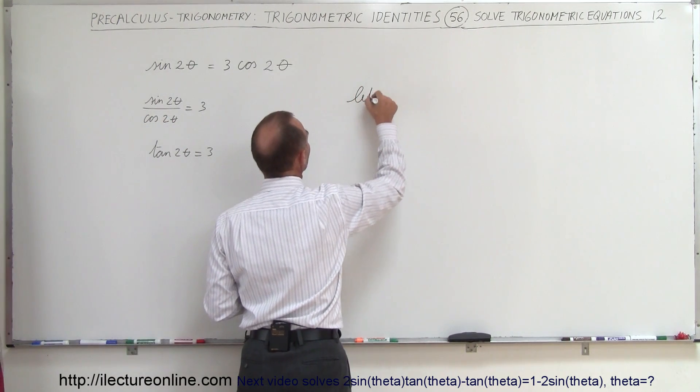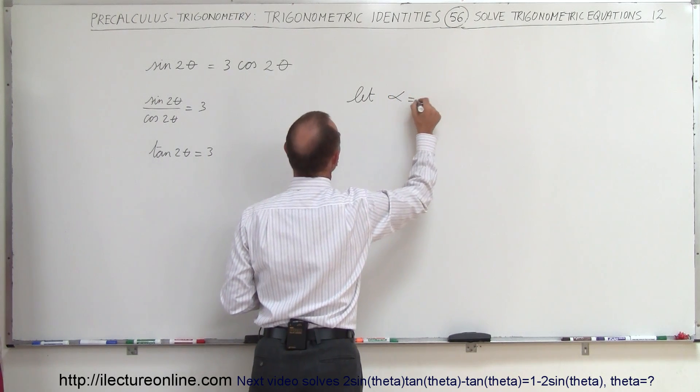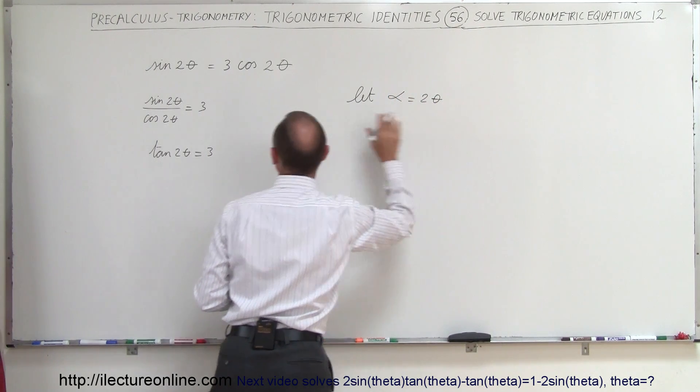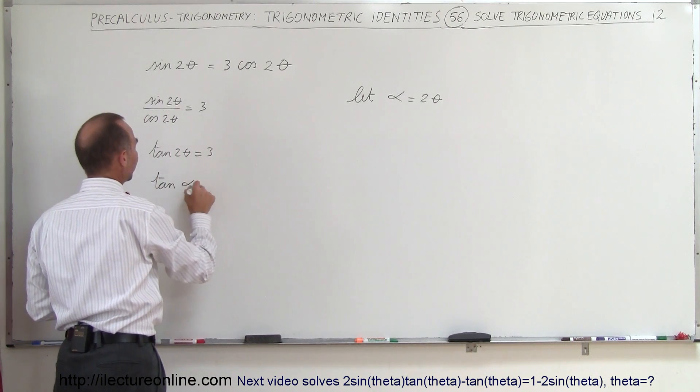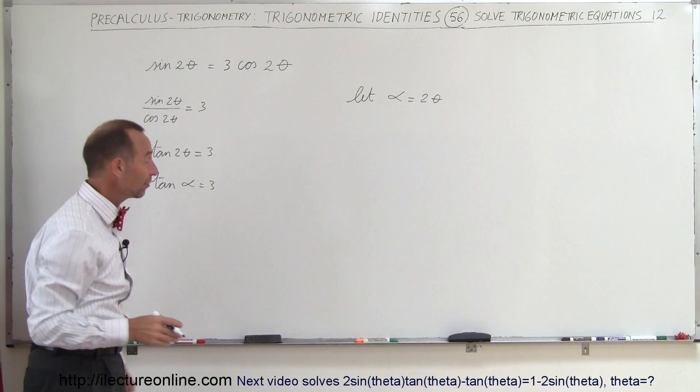So let's take another angle, the angle α equals 2θ, and then we substitute that in here. So now we have the tangent of α equals 3, and now we simply have to solve for that.